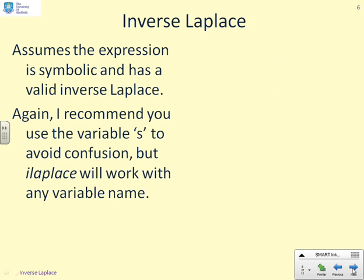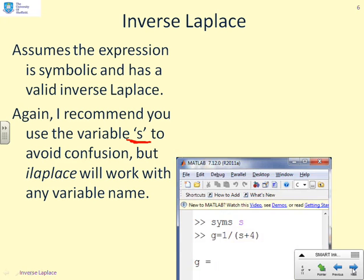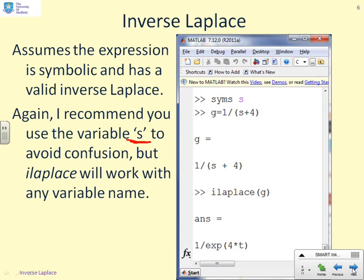For inverse Laplace, we assume the expression is symbolic and has a valid inverse Laplace transform. Again, it's recommended to use the variable `s` to avoid confusion, though `ilaplace` will work with whatever variable name you give it. In a simple example, first define `s` as a symbolic variable. Then define a Laplace transform, for example `g = 1/(s+4)`. As far as MATLAB is concerned, it's just a symbolic expression where `s` is the symbolic variable.